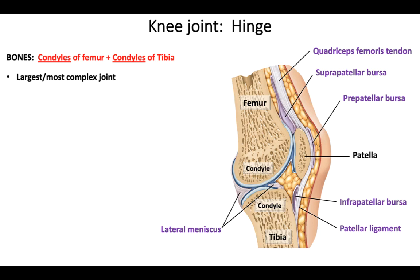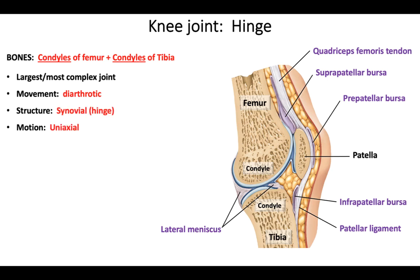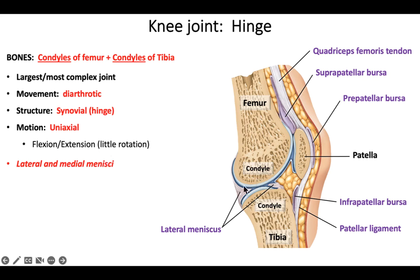The knee is the largest and most complex joint. Its complexity comes from several structures: there are menisci (lateral and medial), many bursae for cushioning, intracapsular ligaments like the ACL and PCL, collateral ligaments, and the patella, which forms a joint with the femur. It is diarthrotic, synovial, hinge type, and uniaxial, allowing flexion and extension with only a slight degree of rotation. Menisci are fibrocartilage.